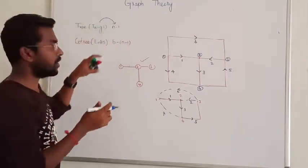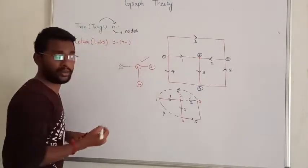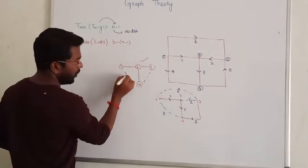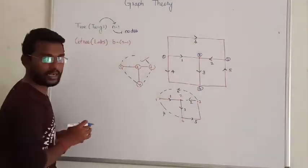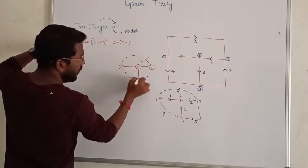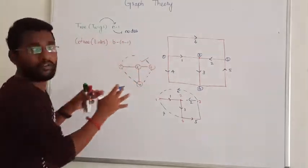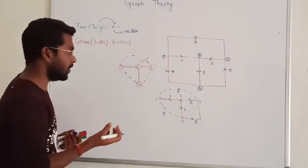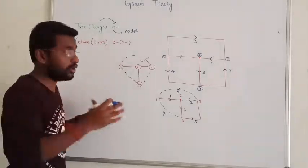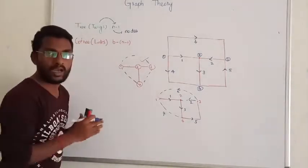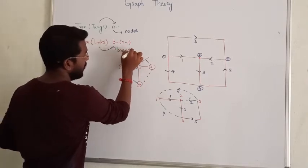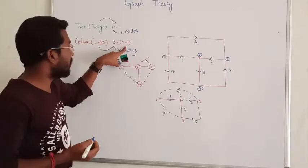The number of twigs is equal to n minus 1, where n is the number of nodes. The number of links can be calculated using: number of links equals number of branches (b) minus number of nodes minus 1, that is b minus (n minus 1). Branches not considered while forming the tree are called links.